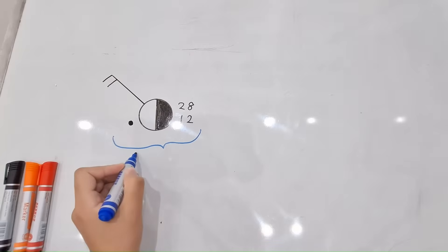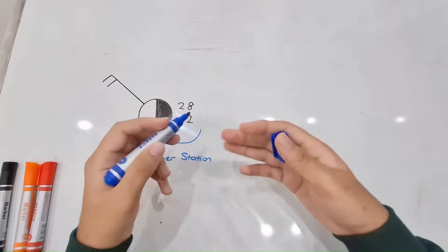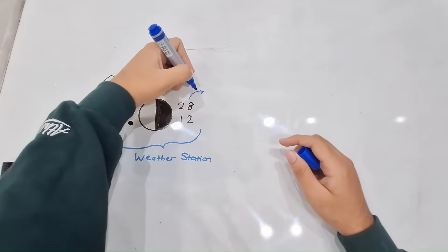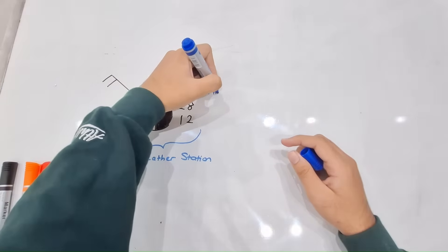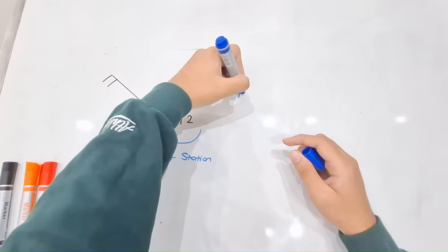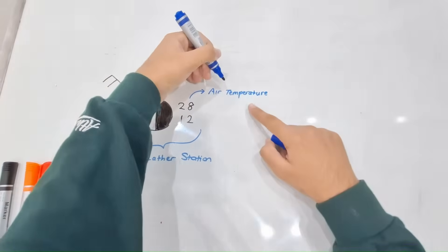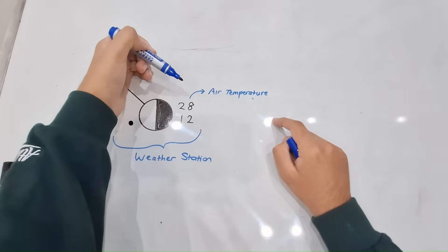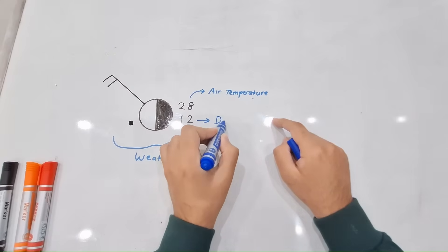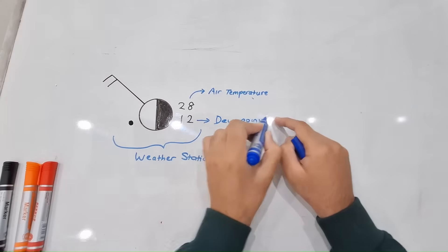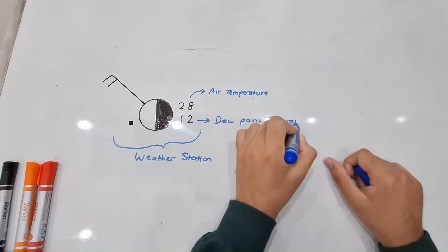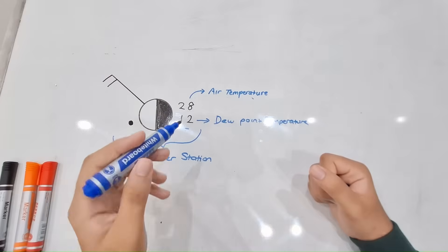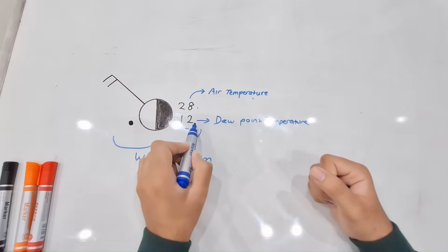So this is a weather station. Let's analyze it from the right-hand side. First, we can see two numbers here. The number on top, which is 28 degrees Celsius, is the air temperature — this is what we refer to when we say it's very hot today. The number at the bottom will be your dew point temperature, which gives you more information about humidity.